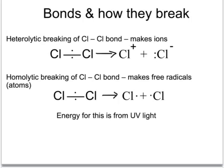There are two ways a covalent bond can break. One way is where both of the electrons in the bond go over to one of the atoms, and this makes ions — here, a chlorine plus and a chlorine minus ion. The second way, which is the way that we're going to look at, is where one of the electrons goes to each of the atoms making up the bond. This is called homolytic breaking, and this forms what are called free radicals, which have an unpaired electron and make them very, very reactive.